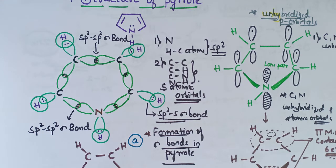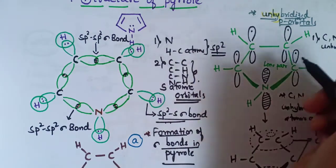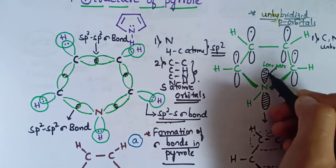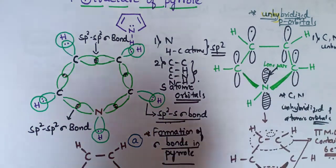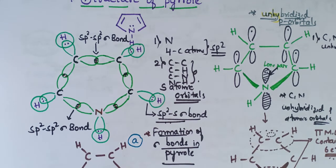Each carbon's p orbital contains one electron, while nitrogen's p orbital contains two electrons — these two electrons are the lone pair of electrons on nitrogen. So carbon has one electron in its p orbital and nitrogen has two electrons, which are its lone pair.